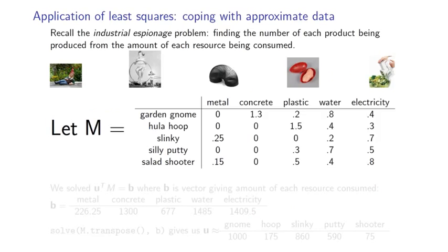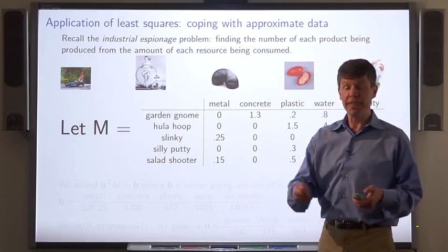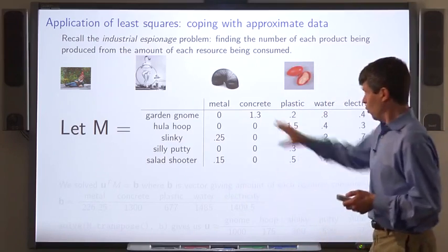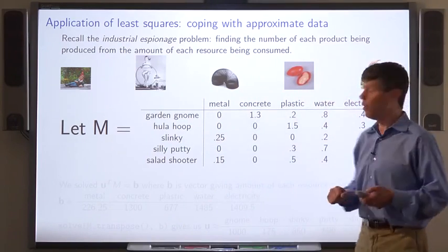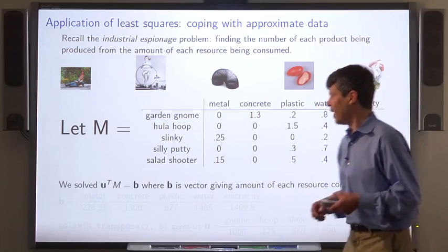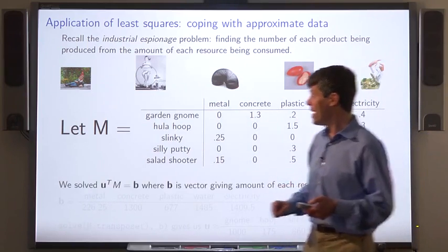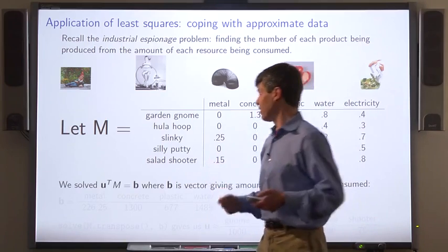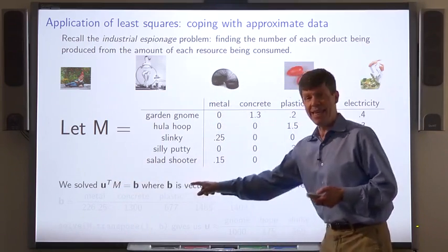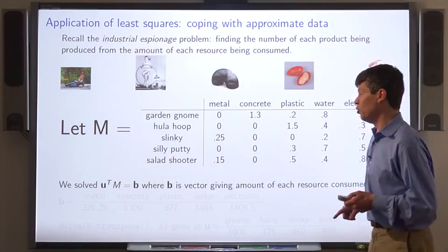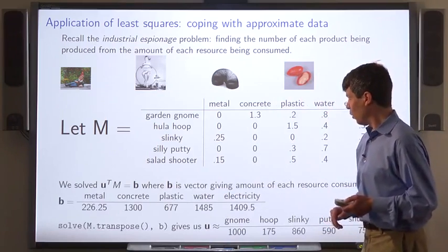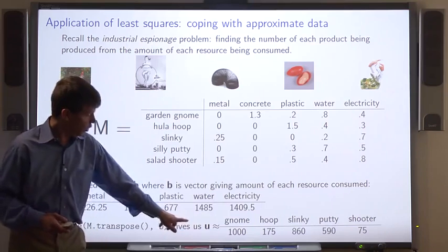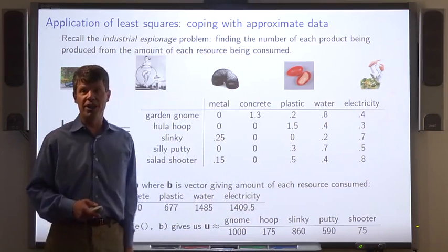There are a bunch of products. And we wanted to figure out how many of each product a factory was making by measuring the resources that they were consuming. We had a table that told us for each unit of each product how much of each of these resources was needed. And we found out how much of each product was made by solving the vector matrix equation, u times m equals b, where b is the vector giving the amount of each resource used. So here's the vector b. We use solve. And what we end up with is this vector u, which gives the amount of each product being used.